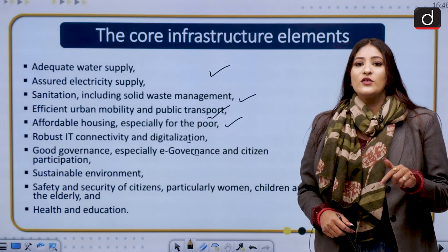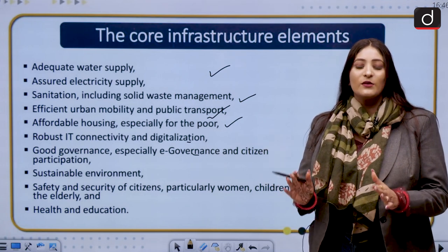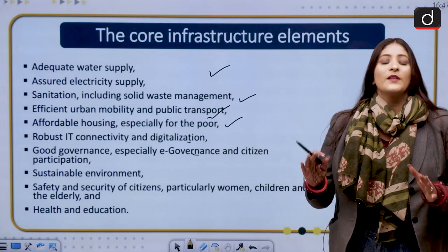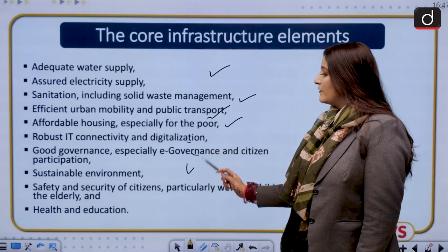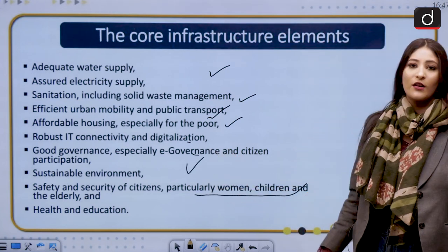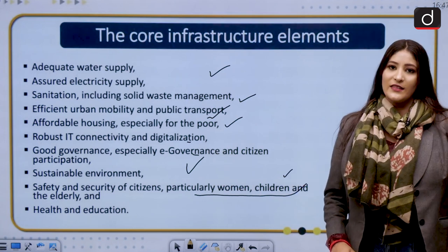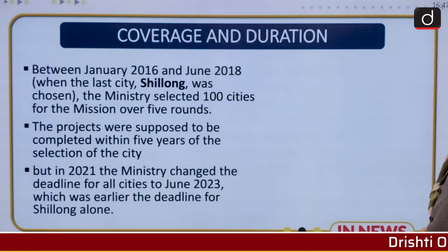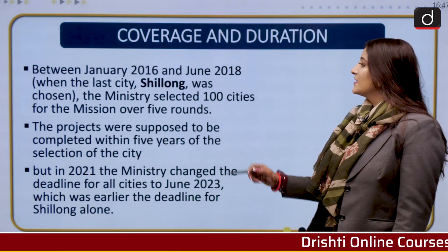Good governance means minimum government, maximum governance — the government should not interfere as long as people are able to live sustainably and harmoniously. The mission also covers economic and environmental areas, sustainable environment, safety and security of citizens — particularly women, children, and the elderly — as well as health and education. These are the core areas of development.